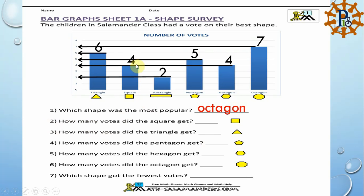How many votes did the square get? The square got 4. How many votes did the triangle get? Triangle got 6. How many votes did the pentagon get? Pentagon got 5. How many votes did the hexagon get? Hexagon got 4. How many votes did the octagon get? Octagon got 7.